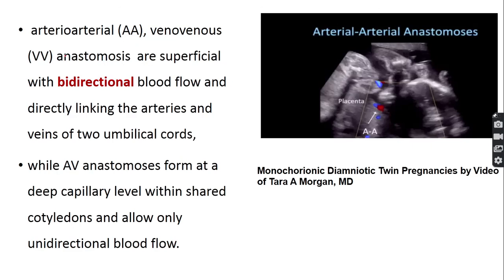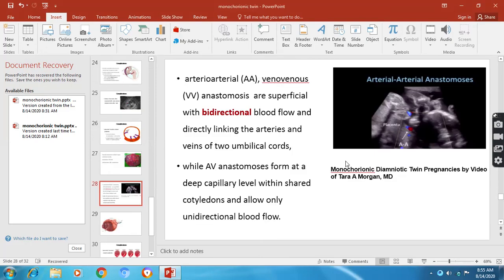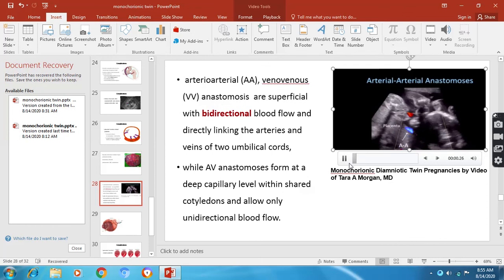Arterial-arterial and venous-venous anastomoses are superficial and show bidirectional blood flow. Arterial-venous anastomoses form at the deep capillary level within a shared cotyledon and allow only unidirectional blood flow. The red-blue color coding in the diagram indicates bidirectional flow of blood in arterial-arterial or venous-venous anastomoses.